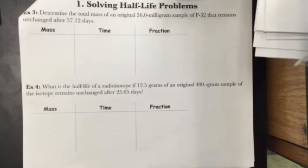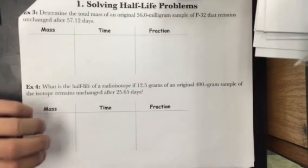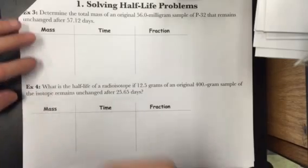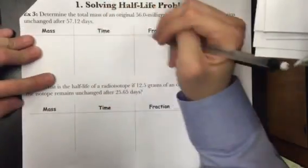So in example 5, it says determine the total mass of an original 56.0 milligram sample of P32 that remains unchanged after 57.12 days.